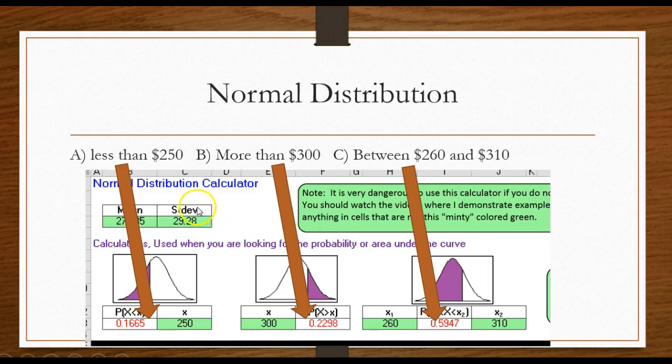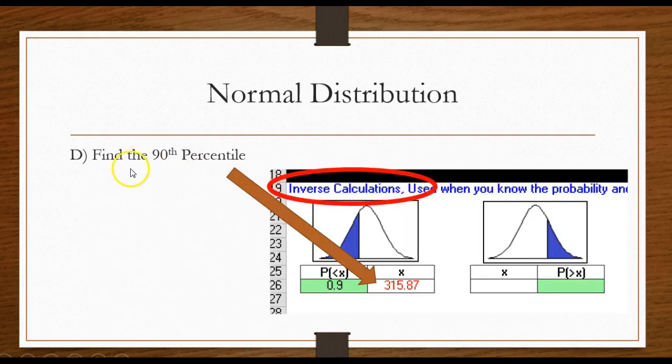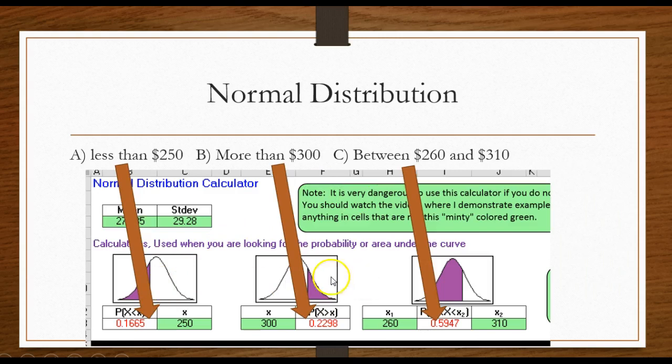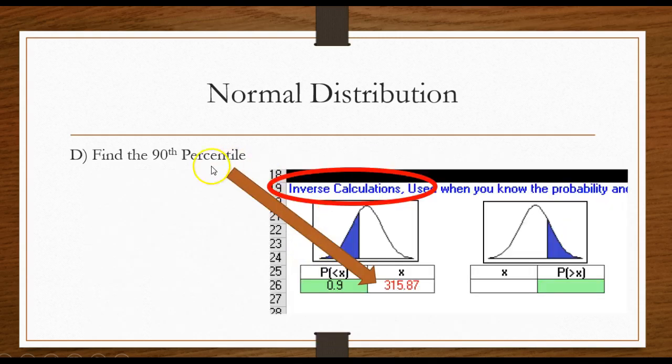Okay, at the bottom of this calculator, if you haven't seen it before, just look around my site, you'll find the normal distribution calculator. There is some blue jello type calculations I call them where you can do the inverse things like finding the 90th percentile.